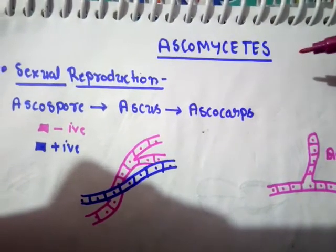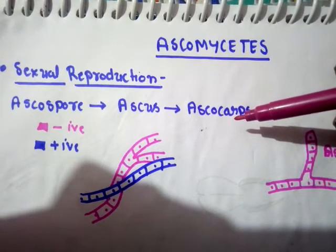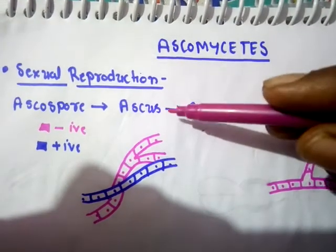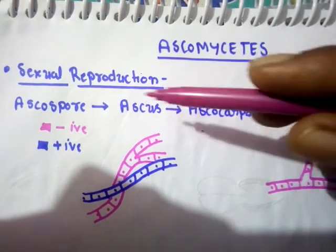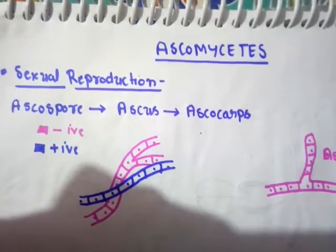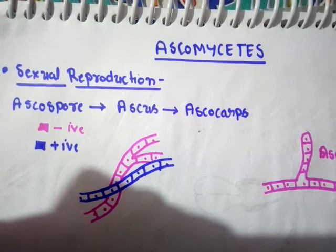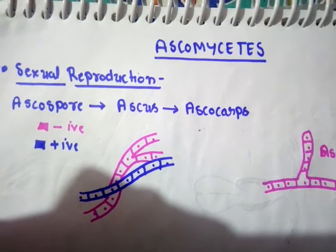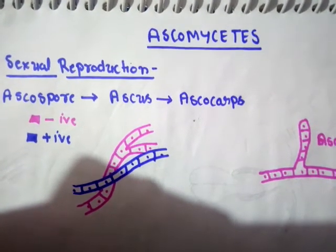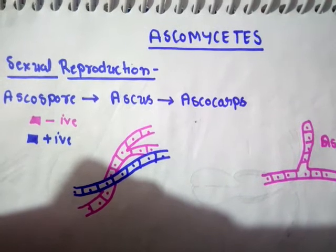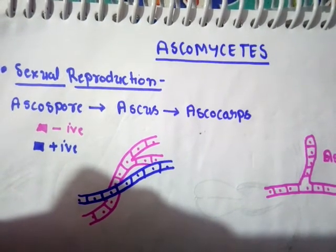In Ascomycetes, the fruiting bodies are ascocarps, which consist of asci, and asci are the sac-like structures that produce the ascospores. We will discuss sexual reproduction in Ascomycetes with an example of Penicillium notatum — the fungus used to produce the penicillin antibiotic.